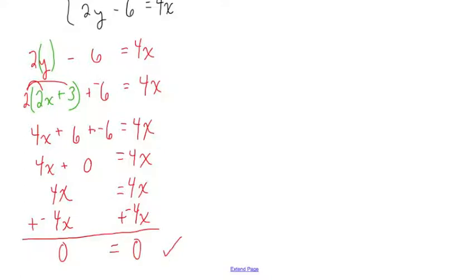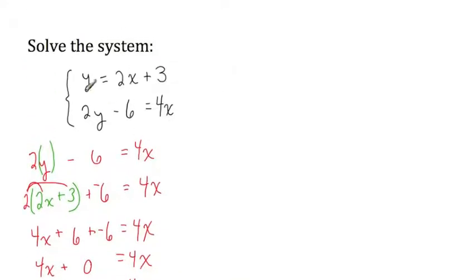So what does this mean? This is going to mean something different. This is not an inconsistent equation. So just like we did when we studied inconsistent equations, let's go ahead and go back to the original system and solve by graphing.